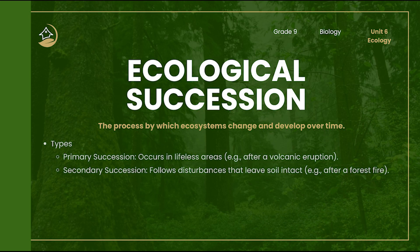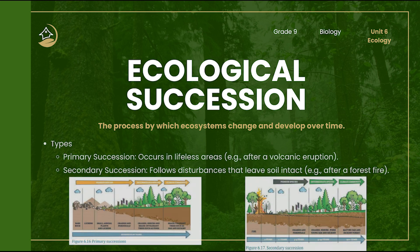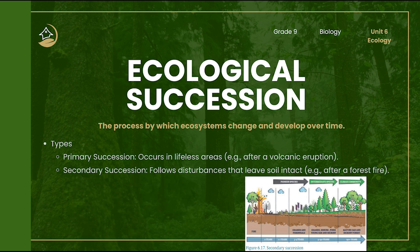Ecological succession is the process of gradual change in an ecosystem over time. There are two types: primary succession and secondary succession. Primary succession happens in places with no life or soil, like after a volcanic eruption, and it starts with pioneer species like lichens that can survive harsh conditions and build soil. Secondary succession happens where life used to be but was disturbed, like after a fire or flood — soil is already there, so plants regrow faster. Succession shows how ecosystems recover, adapt, and eventually reach a stable state again.